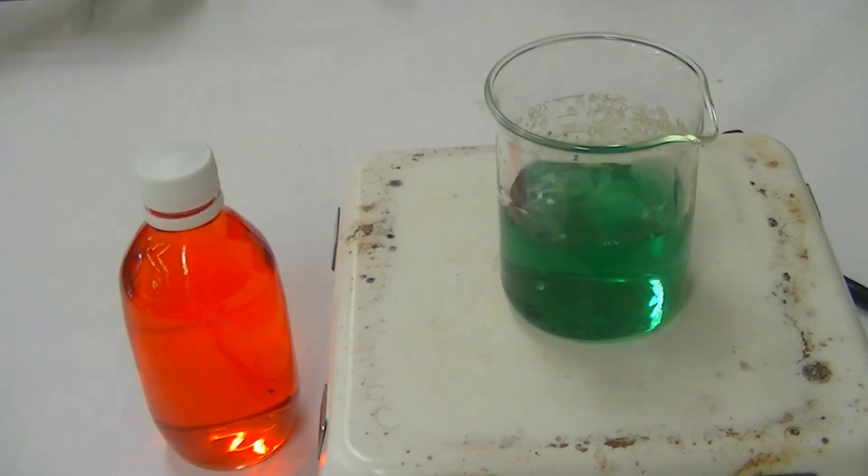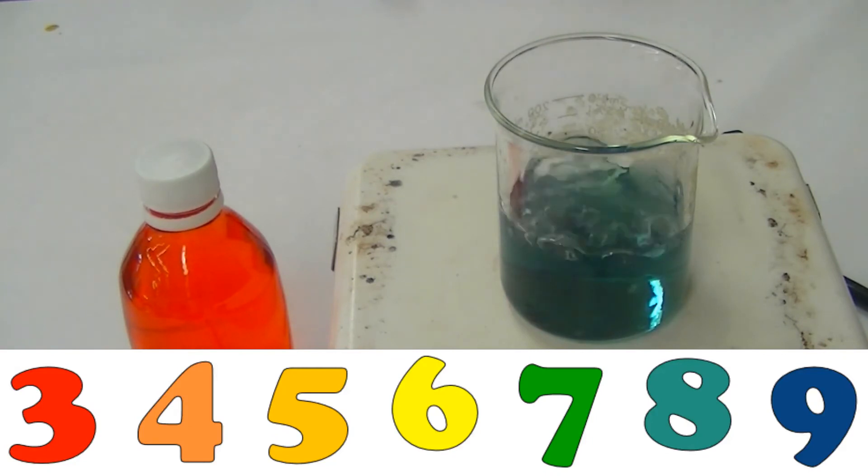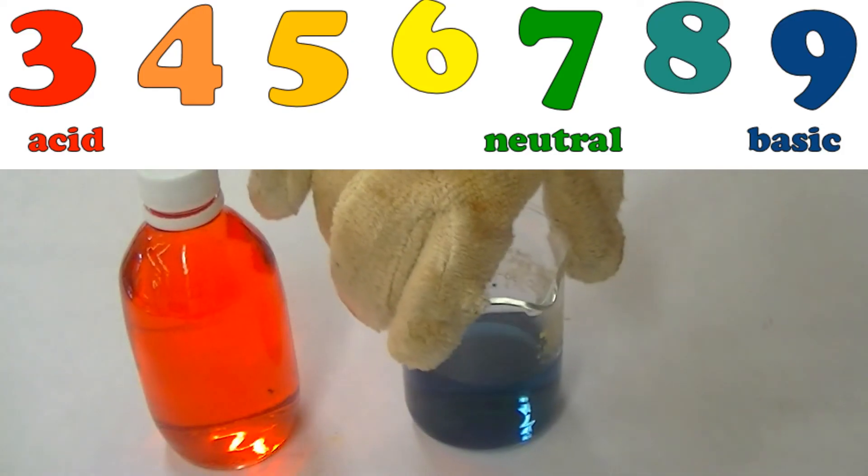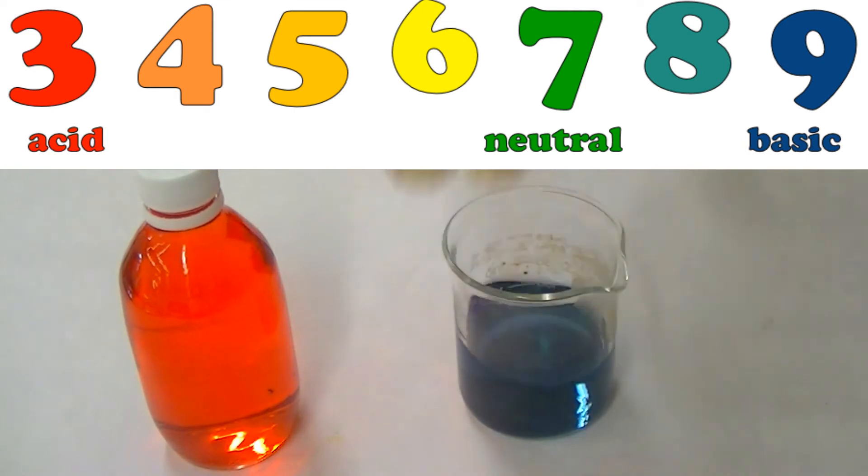After boiling off all the carbon dioxide, the club soda appeared to have a pH of about 8. This basic pH is likely due to the presence of basic compounds such as potassium bicarbonate and sodium citrate in the club soda. Wow! That's a pretty drastic change in pH, wouldn't you agree?